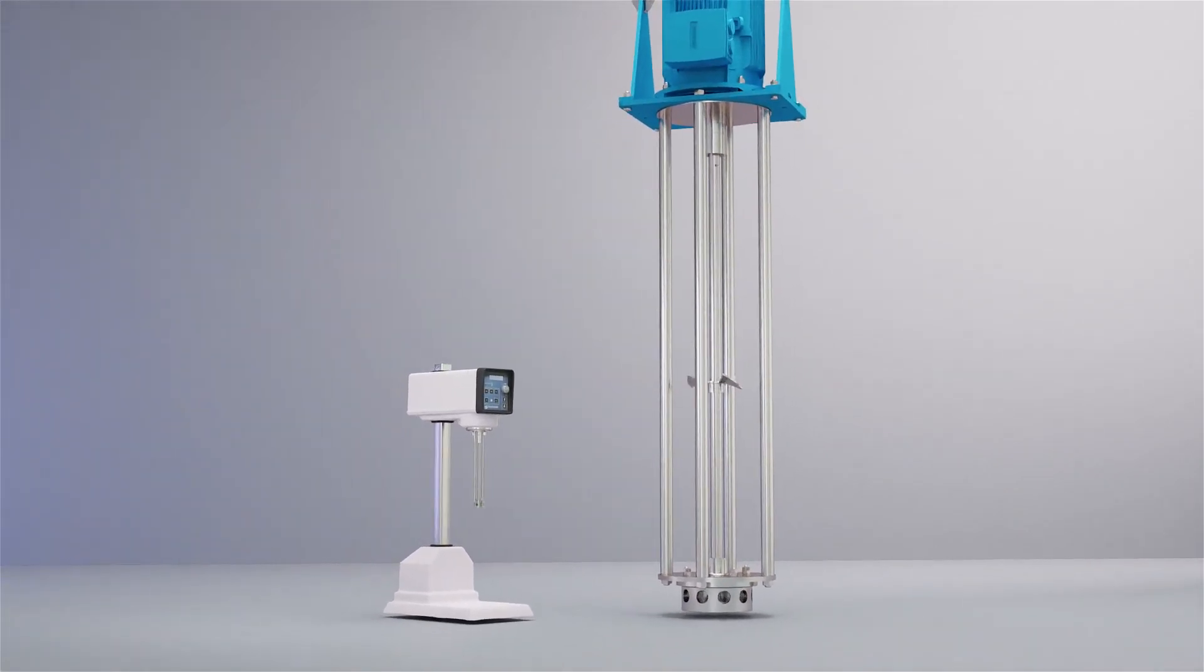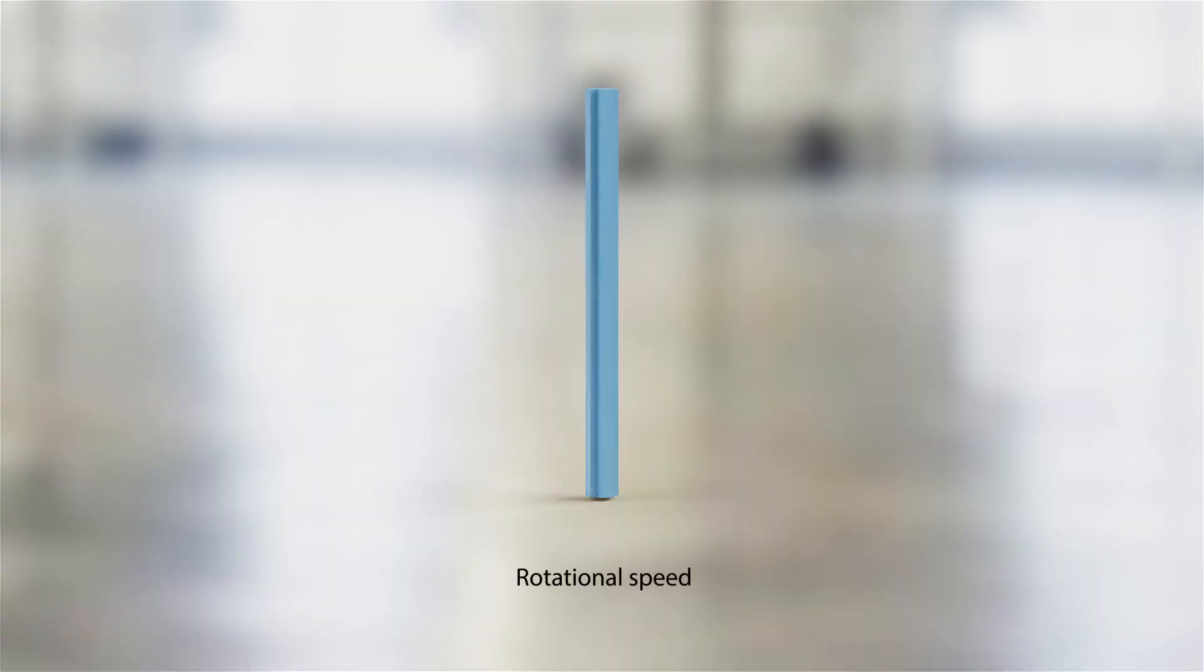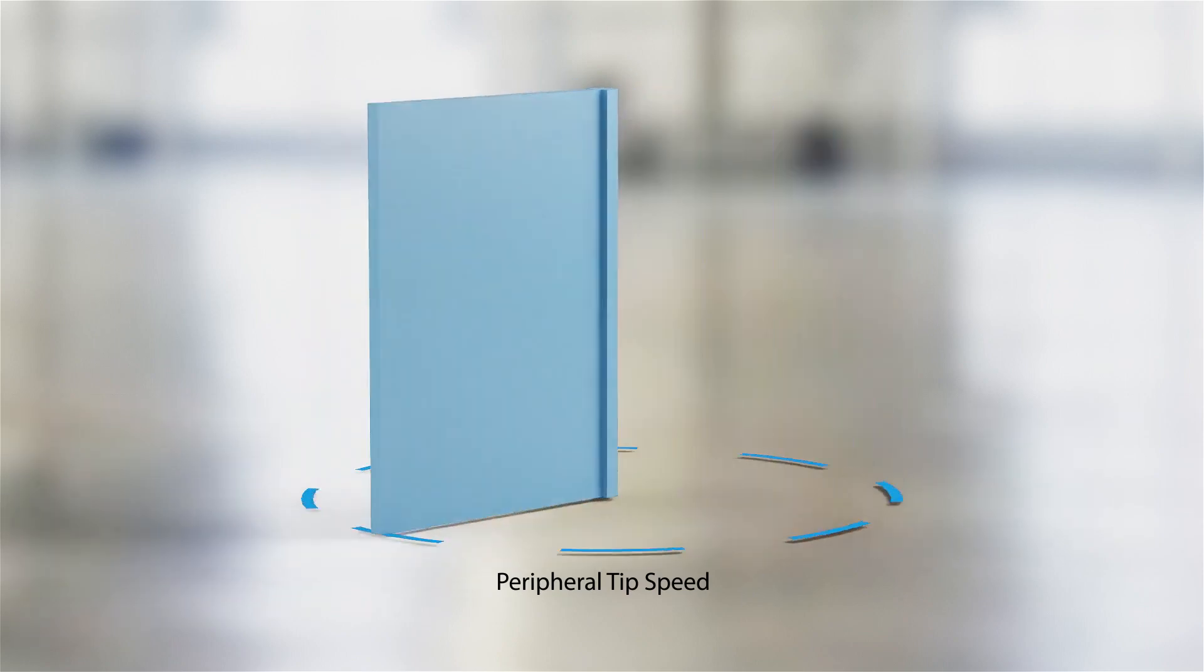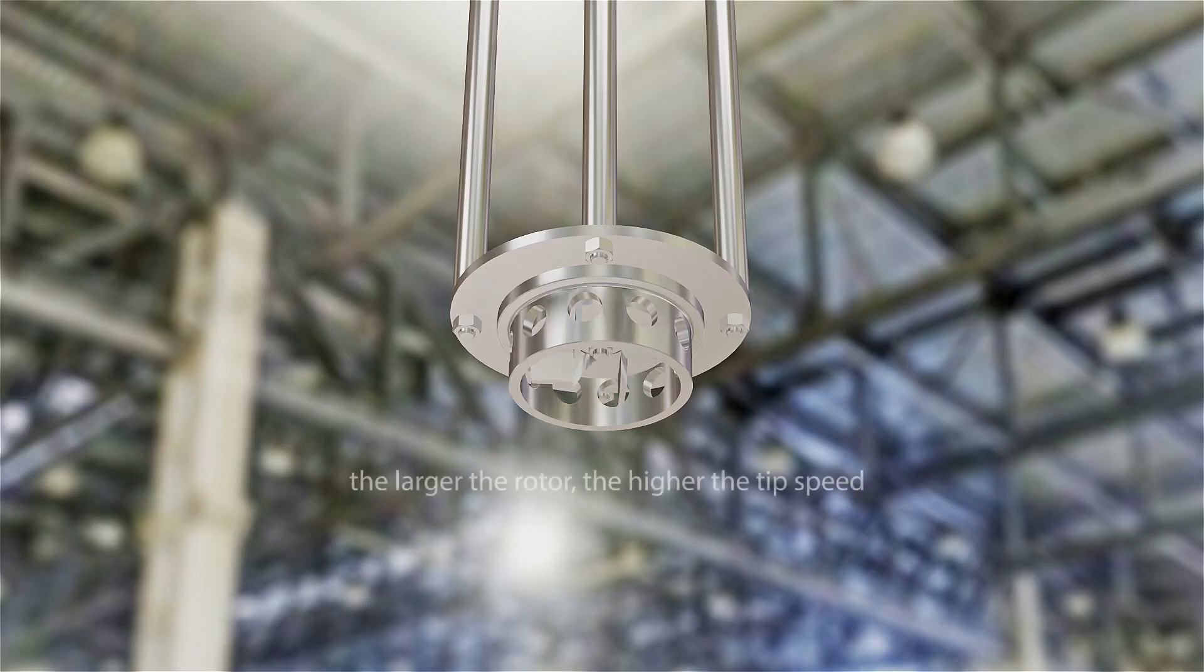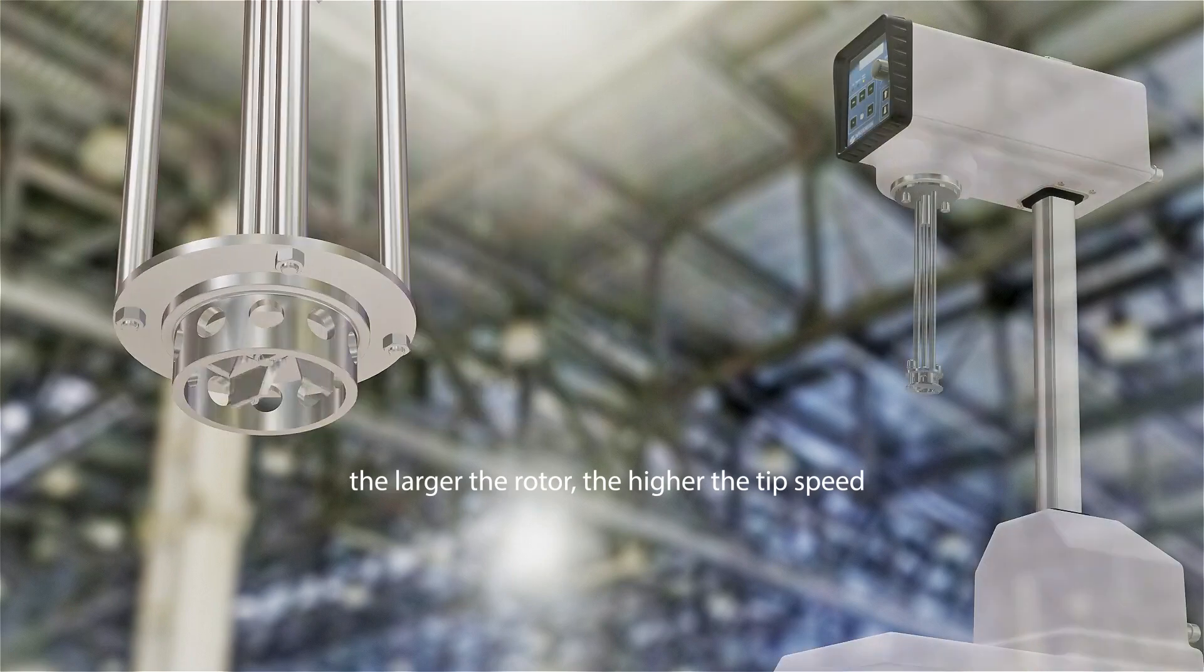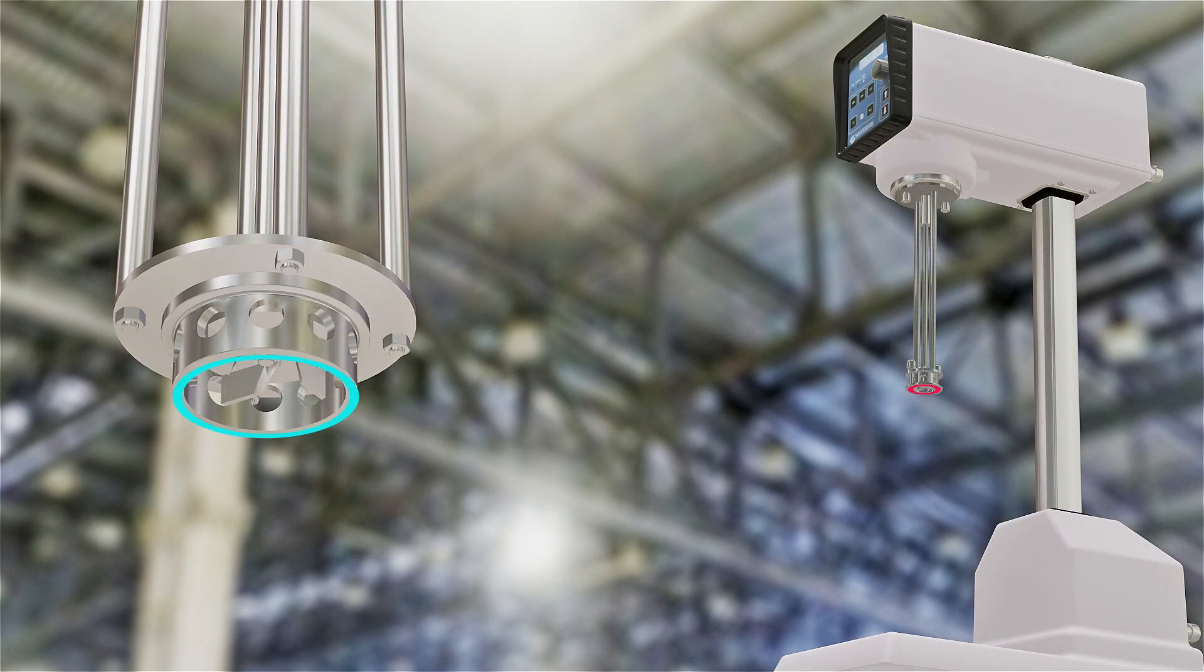In simple terms, the RPM relates to how fast the motor and mixer shaft is rotating, while the tip speed is a measure of the distance traveled in a set time by a point on the periphery of the rotor. So with a constant RPM, the larger the rotor, the higher the tip speed.